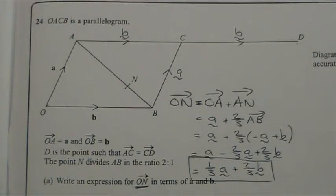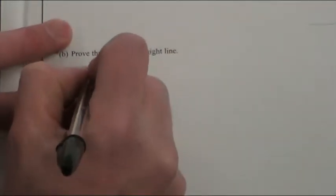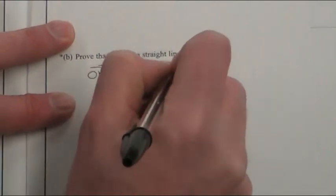So I'm going to write down here very quickly what ON is again. So ON from my last answer is one third of a plus two thirds of b.